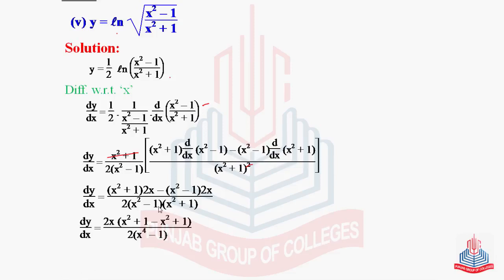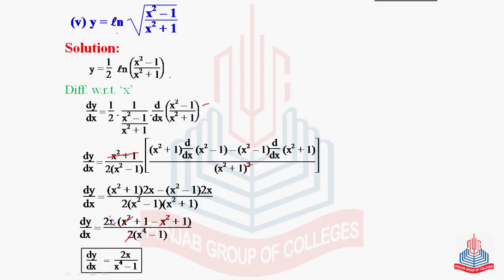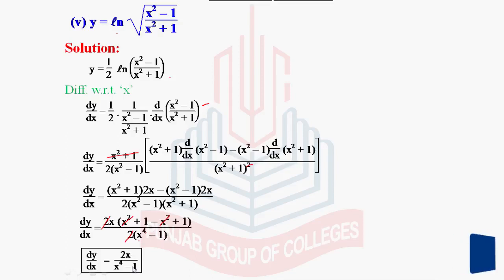Using the algebraic formula (a - b)(a + b) = a² - b², we get (x²)² - 1² = x⁴ - 1. The x² terms cancel, 1 + 1 = 2, the 2 cancels, giving 2x in the numerator and x⁴ - 1 in the denominator, which is the required differentiation of the given function.